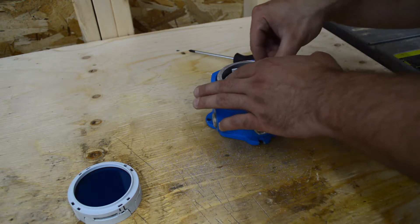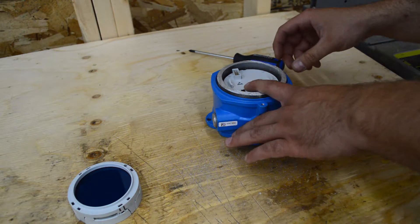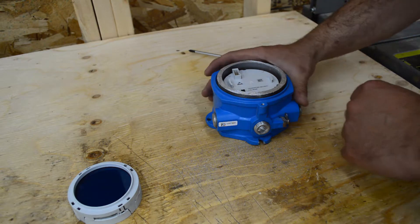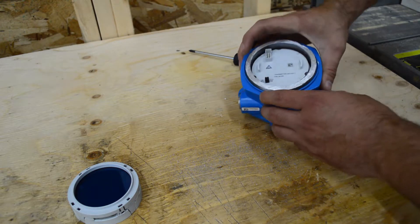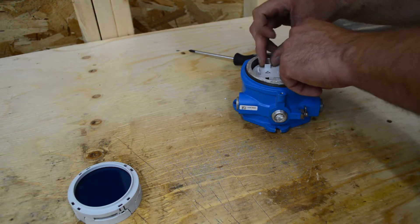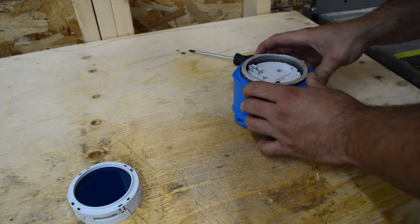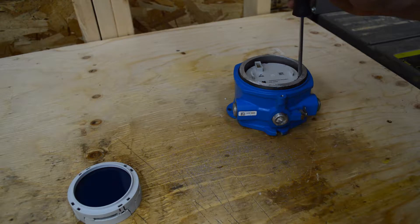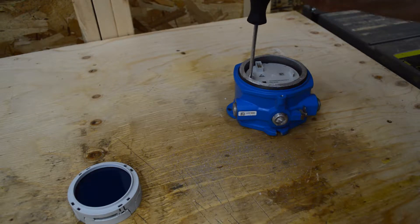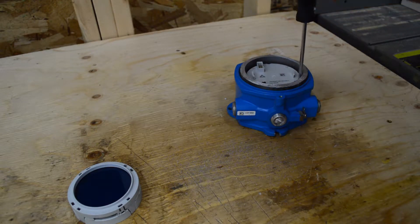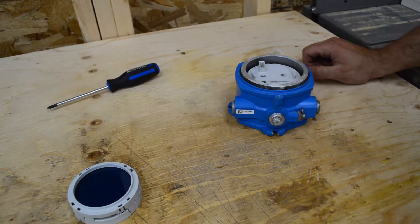So what's happening is the screws that I just undid are too big. They won't go past that body. It won't let me pull this out. Great. So I'm going to have to get a little creative with how I get this out now. In the meantime, I'll just screw these back down.